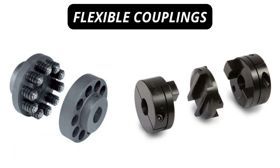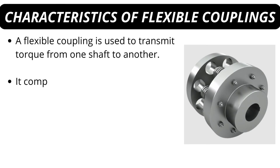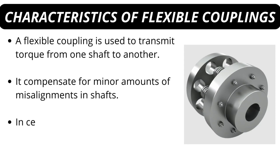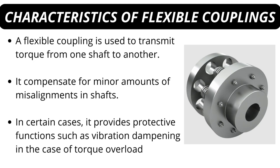Flexible couplings are usually used to transmit torque from one shaft to another when the two shafts are slightly misaligned. They can accommodate varying degrees of misalignment up to 1.5 degrees and some parallel misalignment. They can also be used for vibration damping or noise reduction. Characteristics of flexible couplings: they transmit torque from one shaft to another, compensate for minor amounts of misalignment, and in certain cases provide protective functions such as vibration dampening in the case of torque overloads.